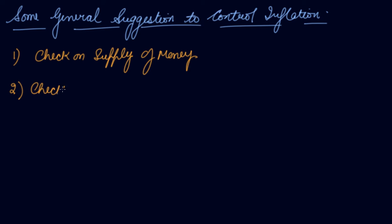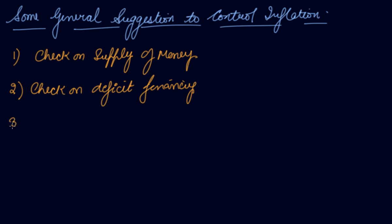Number two is check on deficit financing. The government should take less loans and less borrowing so that government expenditure is reduced. If expenditure is reduced, demand is reduced, and prices will fall down.